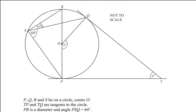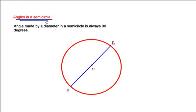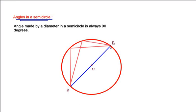Now let us find the value of w using another circle theorem: angles in a semicircle. I have drawn a circle with two points A and B, where AB acts as a diameter passing through center O. The theorem states that the angle made by a diameter in a semicircle is always 90 degrees. The diameter AB divides the circle into two equal semicircles, and any angle drawn in either semicircle by the diameter is 90 degrees.